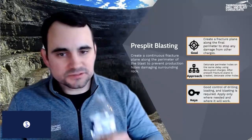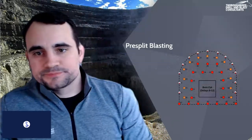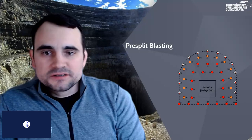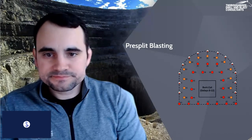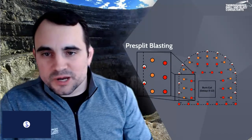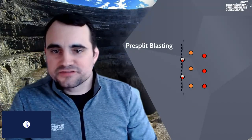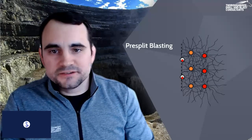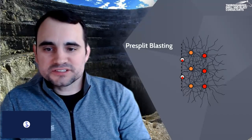In the blast design, all the perimeter holes are timed on a zero delay. Using the underground example — but the same applies to surface — we shoot those perimeter holes first and they create a nice fracture plane along the perimeter. Then we shoot the production holes, and the fractures stop along the pre-split if it's designed correctly.